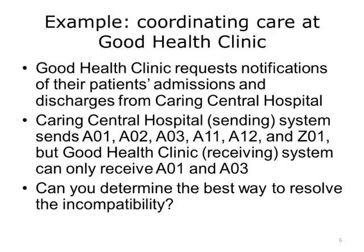Let's look at some examples. Recall Good Health Clinic's request for notifications of their patients' admissions and discharges from Caring Central Hospital. Consider the gaps found in the analysis phase before. We determined that the sending system sends A01 for admit, A02 for transfer, A03 for discharge, A11 for cancel admit, A12 for cancel transfer, and Z01 for pediatric admission. But the receiving system can only receive A01 for admit and A03 for discharge. Can you determine the best way to resolve the incompatibility?